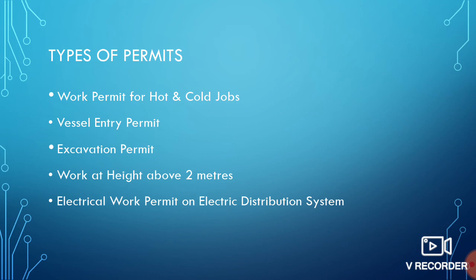Now let's talk about types of work permits. Different types of industries may have different permits, but generally the types include: hot work permit, cold work permit, vessel entry permit, work at height permit (for work above 2 meters), and electrical work permit for work on electrical distribution systems.